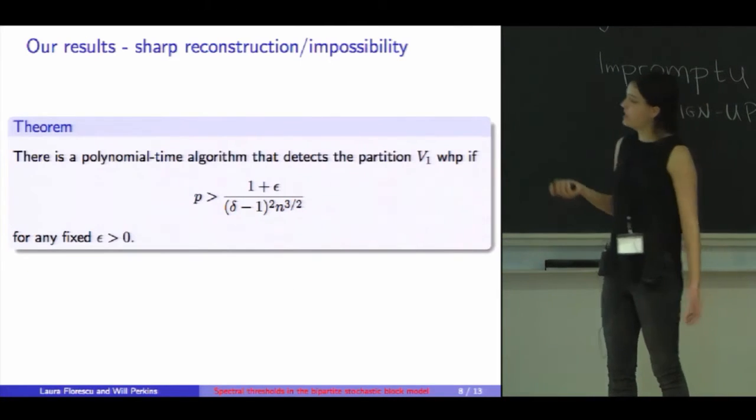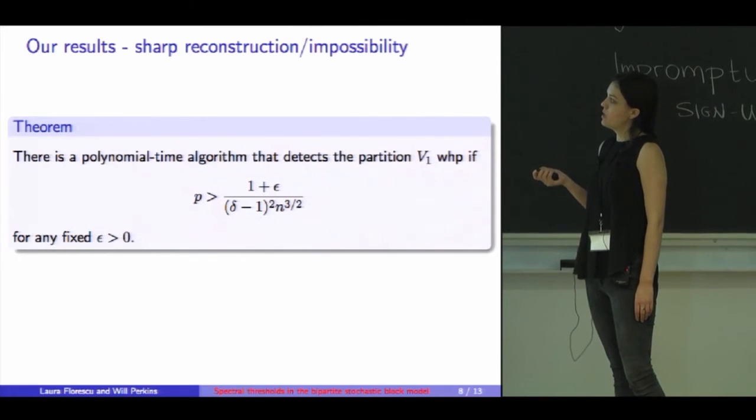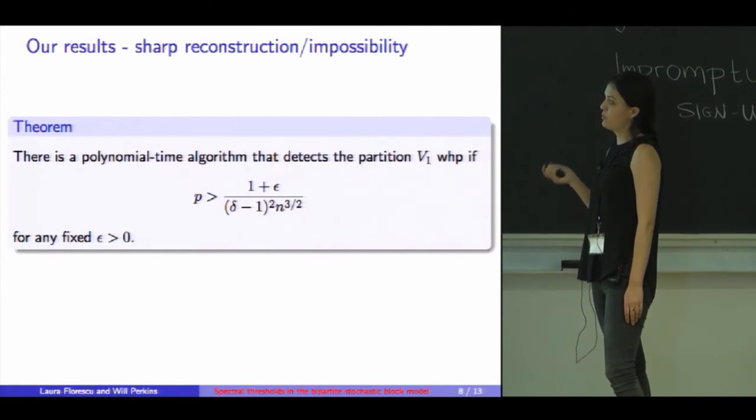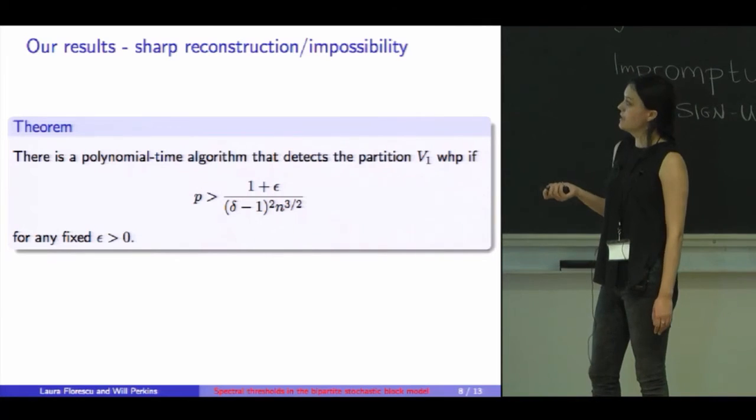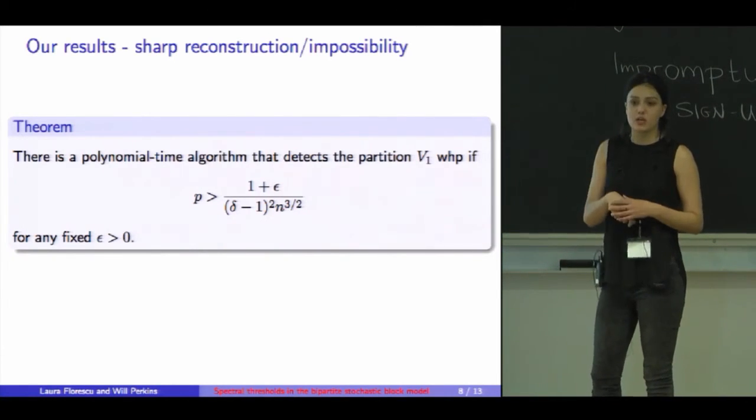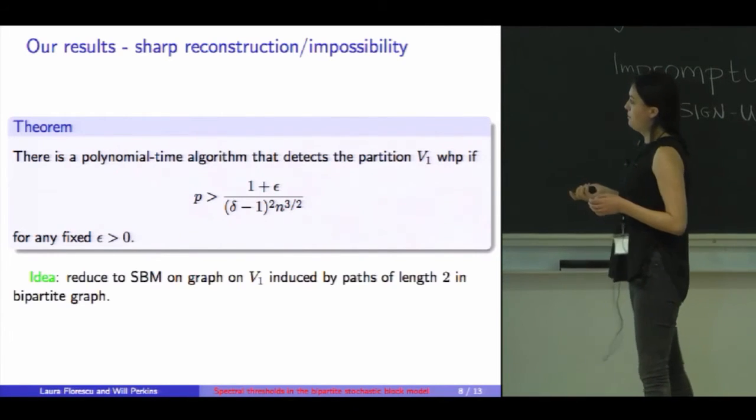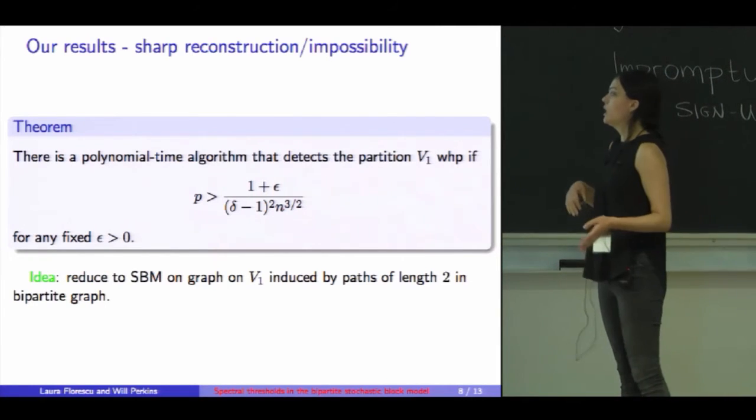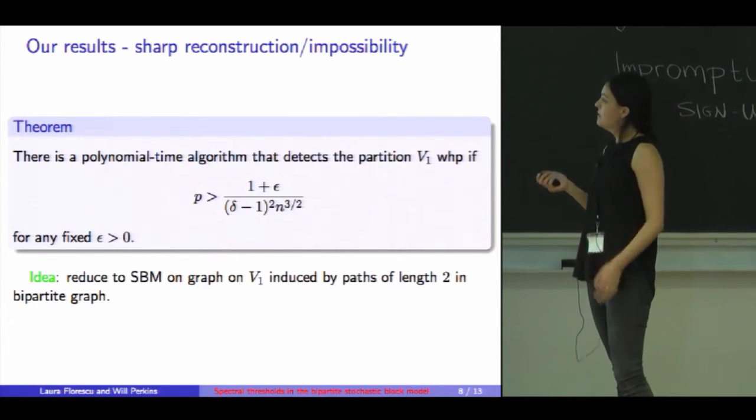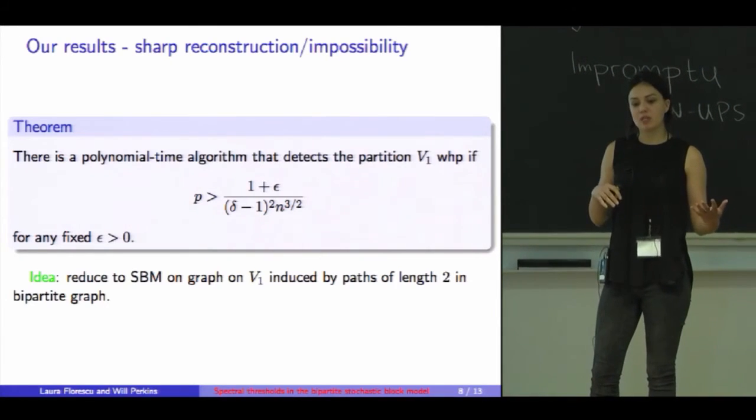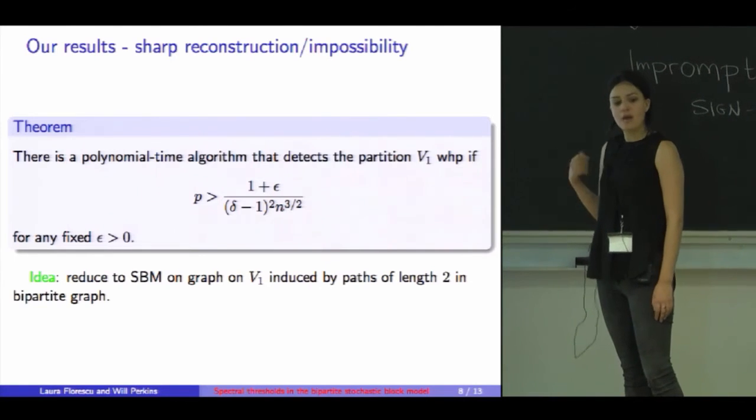On the other hand, if P is larger than (1 plus epsilon) divided by (delta minus 1) squared N to the 3 halves, exactly like the sharp threshold before for any fixed epsilon, there exists a polynomial time algorithm that detects the partition on the left-hand side. The idea is to reduce the bipartite case to a usual stochastic block model on the left-hand side, induced by paths of length 2 in the bipartite graph. And then we apply as a black box the algorithms from Mossel-Neeman-Sly or Massoulié.